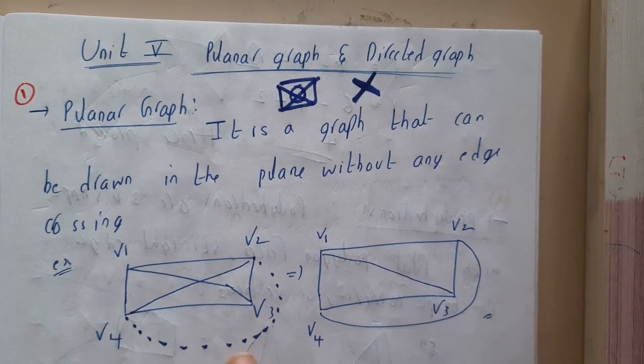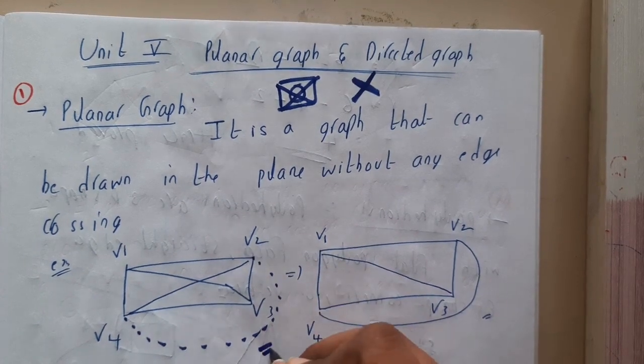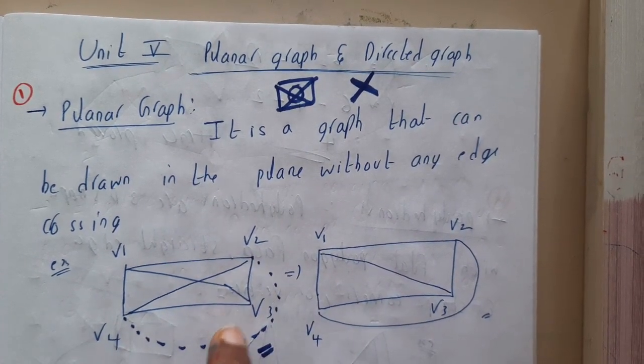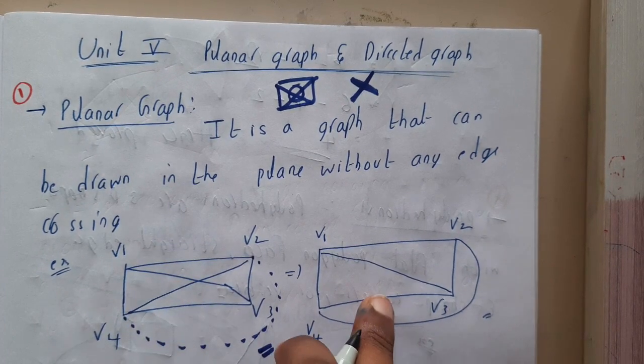That is the reason why you can just make it from outside. Why is it going from inside? You can send it from outside. So this is a planar graph. It became a planar graph now. Hence, this graph is a planar graph and you can convert that in this way.